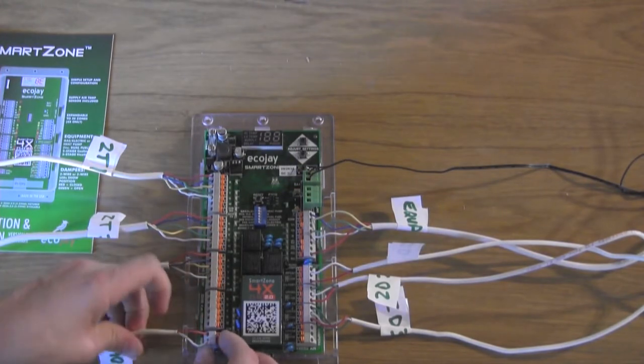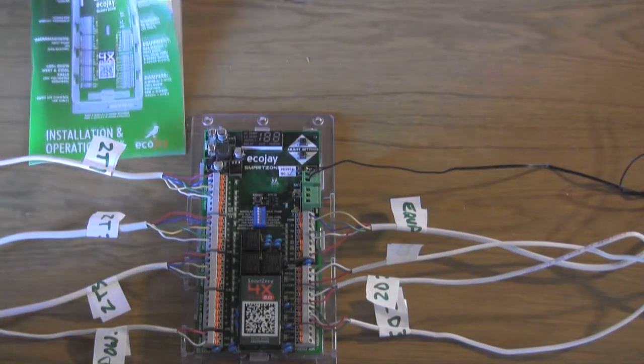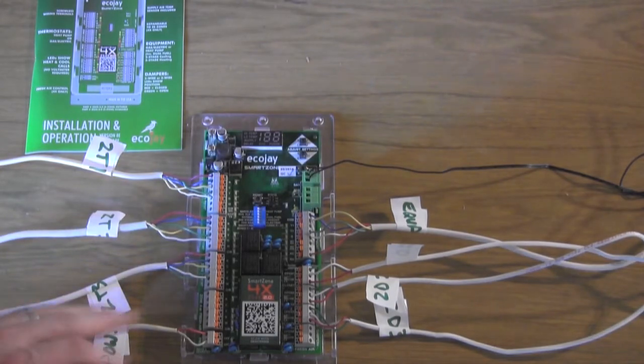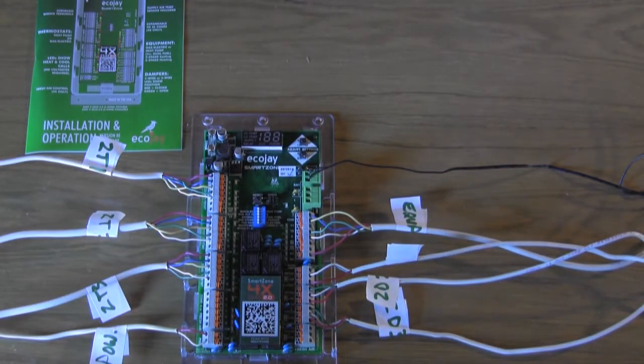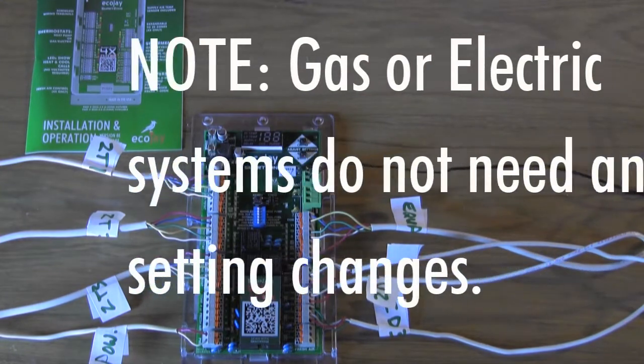Make sure and refer to the SmartZone installation manual to make sure that your transformer is large enough to power all of your dampers and everything associated with the zoning system. It's completely wired now and all that's left to do is to power the board.